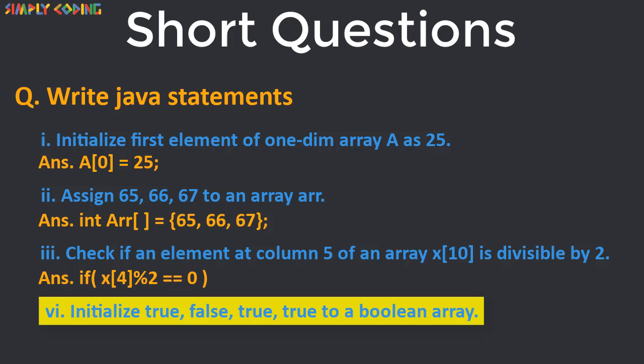Next we need to create a boolean array let's say b and initialize it to values of true, false, true, true which we will put in curly braces. Do not forget to put a semicolon at the end of all of these statements.